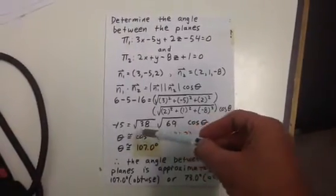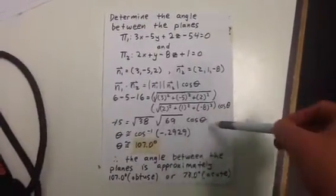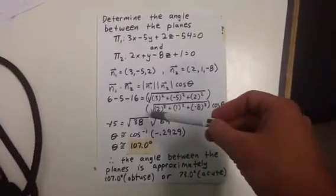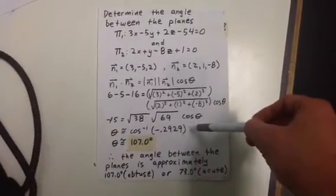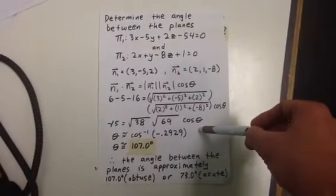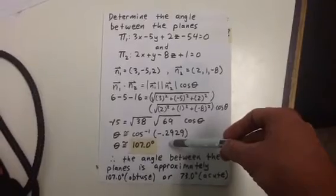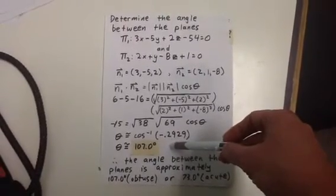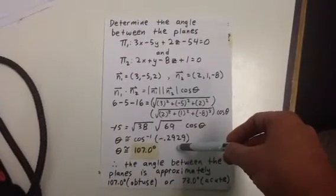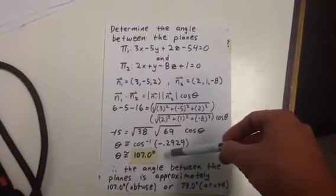Negative 15 is equal to root 38, root 69 cos theta. Isolating cos theta and then taking the cos inverse of that leads to an angle of 107.0 degrees. Now if you think about it, there's going to be two angles, an acute one and an obtuse one, unless they're perpendicular or parallel.